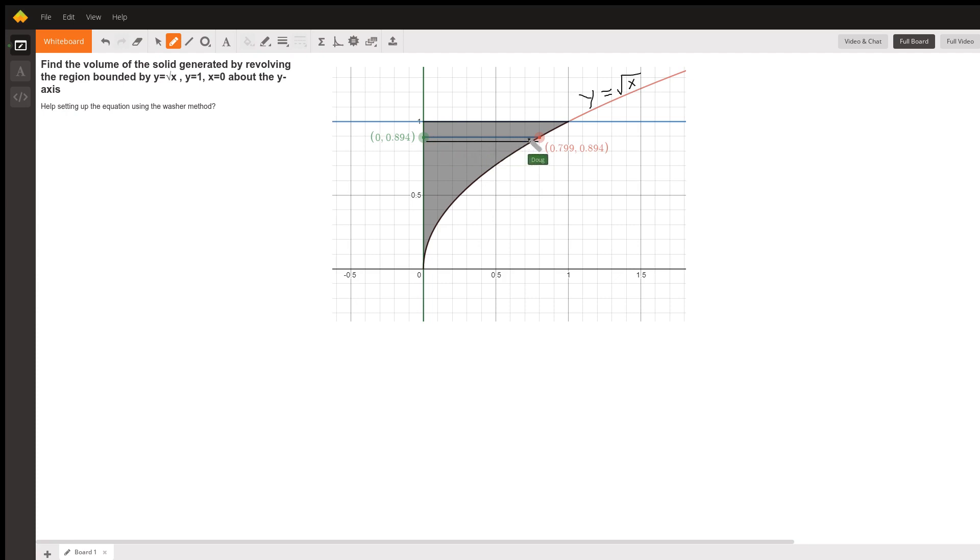This distance right here, that's the radius of a typical washer. And these washers occur infinitely many of them, like this.